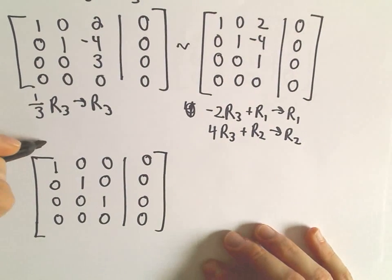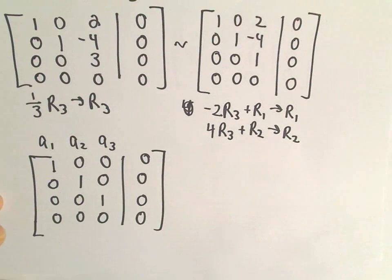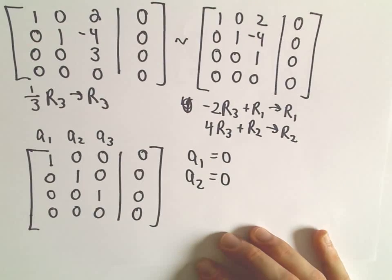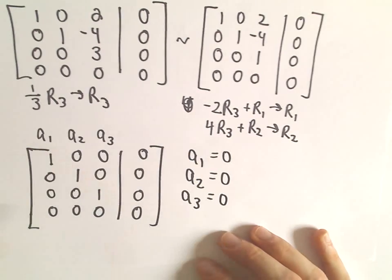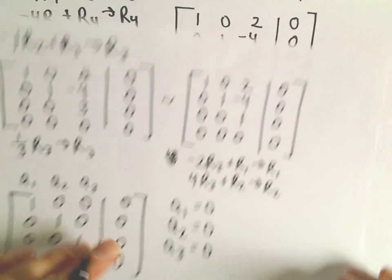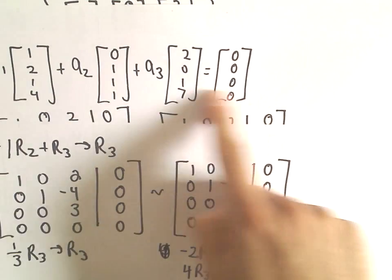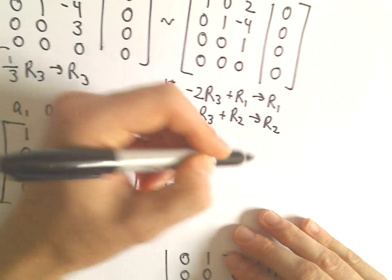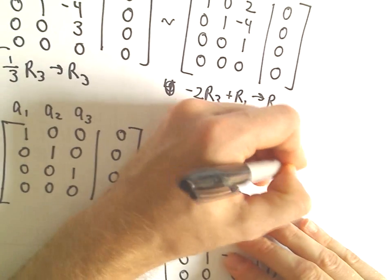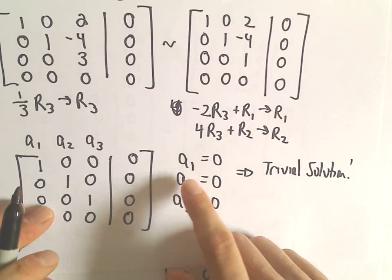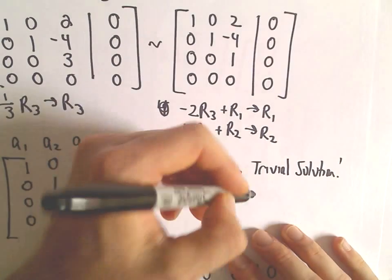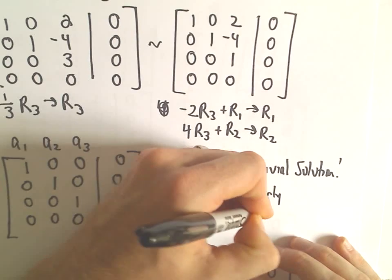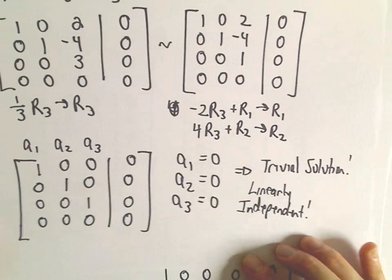So now this tells us, these were the values of our scalars a1, a2, a3. The first row says a1 has to equal 0. It says a2 has to equal 0. And the third row tells us that a3 also has to equal 0 for that original equation to be satisfied. So the only way this original equation is satisfied is if a1, a2, a3 all equal 0. That tells us that we have only the trivial solution. And by definition, if it's only true when all the scalars equal 0,